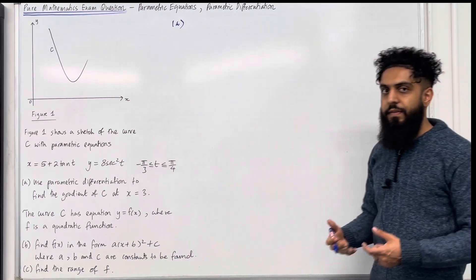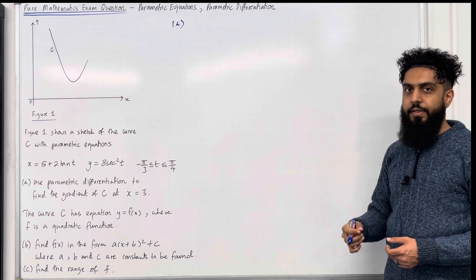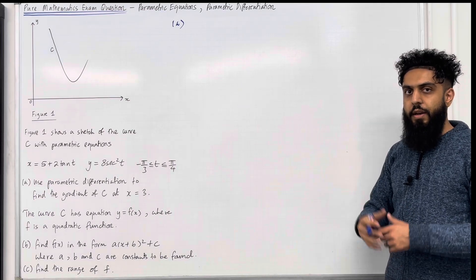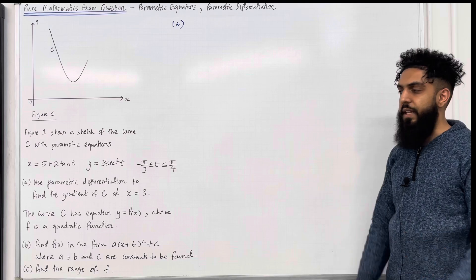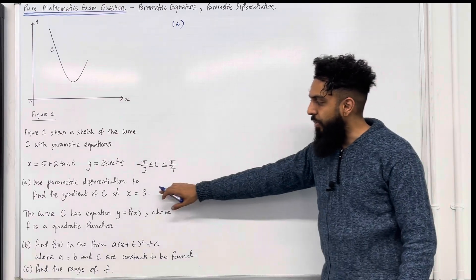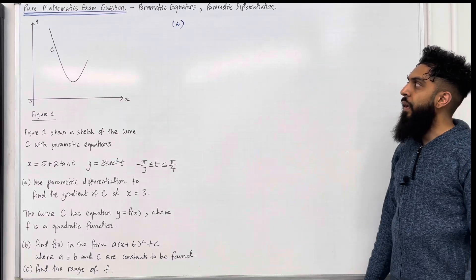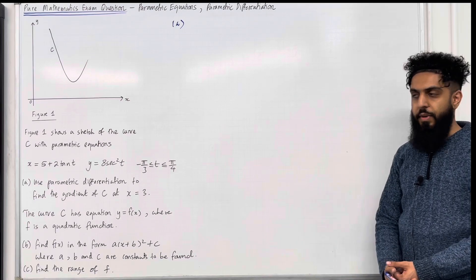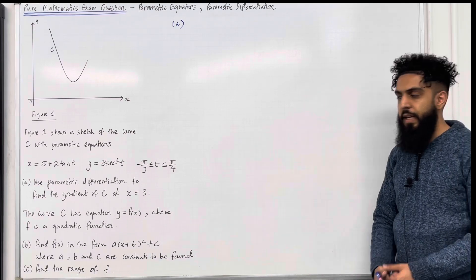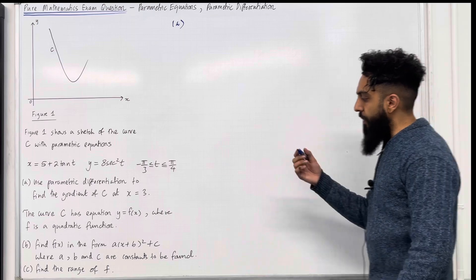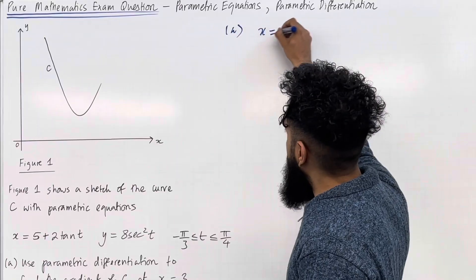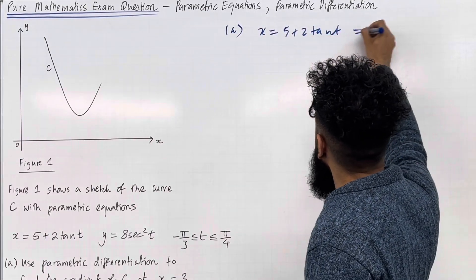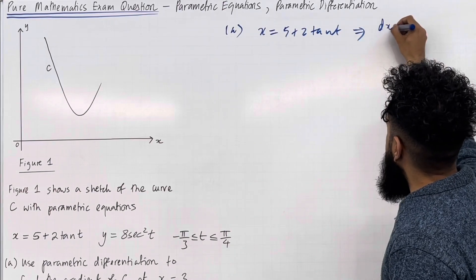In part A, I need to find the gradient function dy over dx. Once I've got dy over dx, I can substitute an appropriate t value to find the gradient of the curve C at x equal 3. I need to apply parametric differentiation because I've got parametric equations. Let's start with the x equation. I've got x equal 5 plus 2 tan t. I need to work out dx over dt.